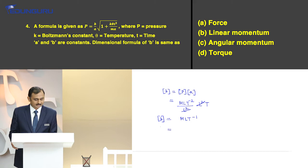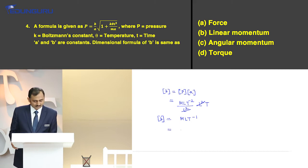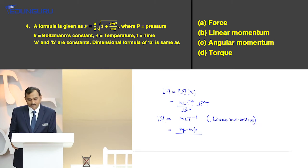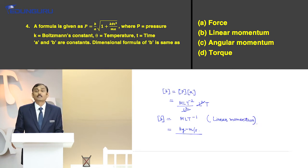This simplifies to MLT⁻¹, which has units of kilogram·meter per second — the dimension of linear momentum. So the correct option is B.